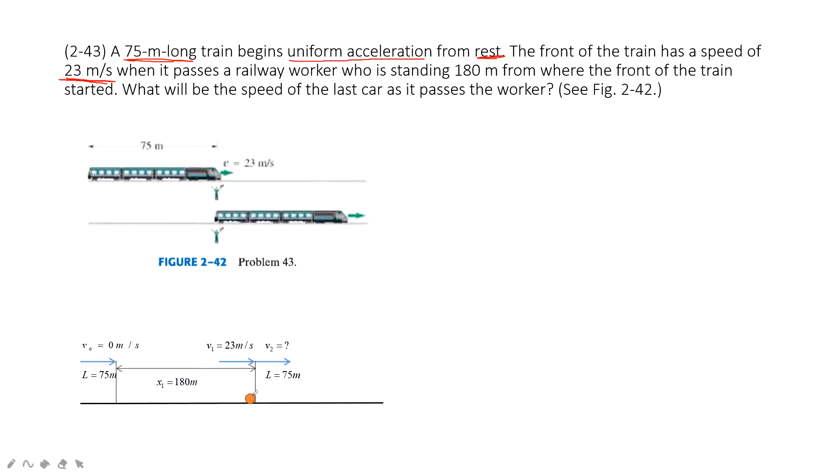We can see this point is the worker, and this one is the train. In this case, we need to consider the length of the train. So this is the initial state. The velocity for the train is zero, right? It is stationary.